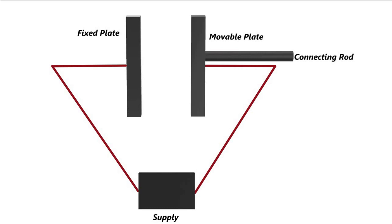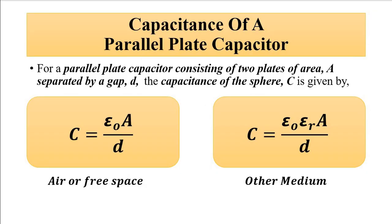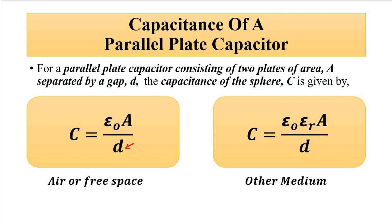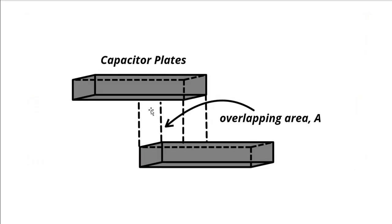The capacitance depends on several parameters. The most important ones used for measurement or sensing purposes are: first, the separation gap between the plates — that is the first important parameter. Next is the area of overlap between the plates — not the individual plate area, but the overlapping plate area. How much portion of each plate is exactly over the other — that is the overlapping area.